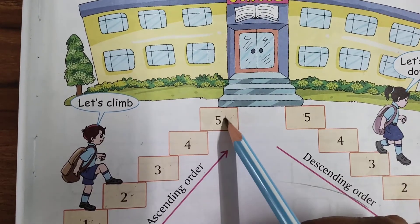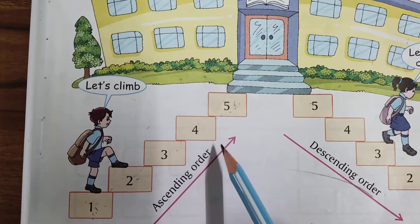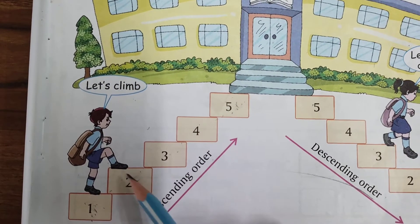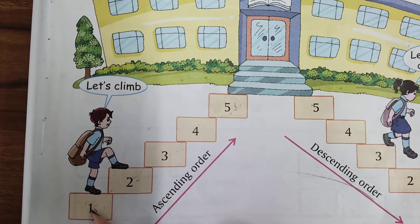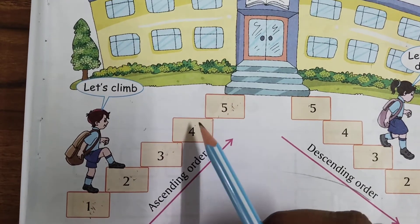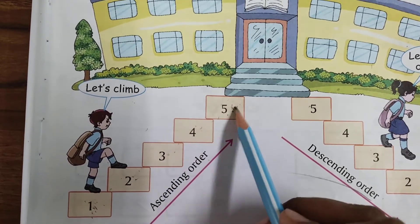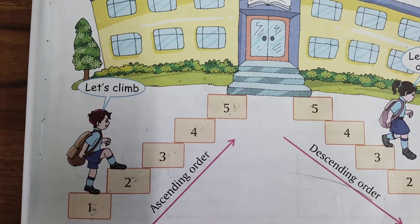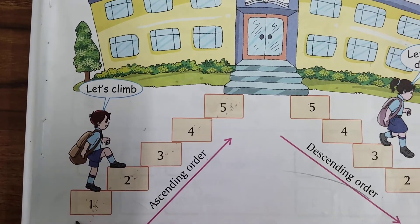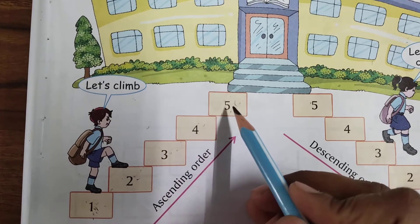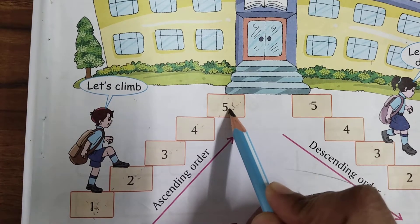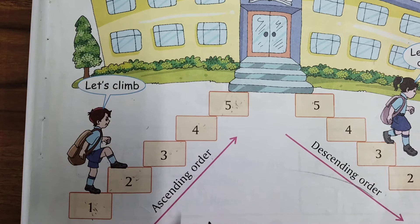Nearby, as we rise, your steps go higher — one, two, three, four, five. So as you go up to a higher number, nearby means moving from a lower to a greater number. So what will happen? Ascending order.